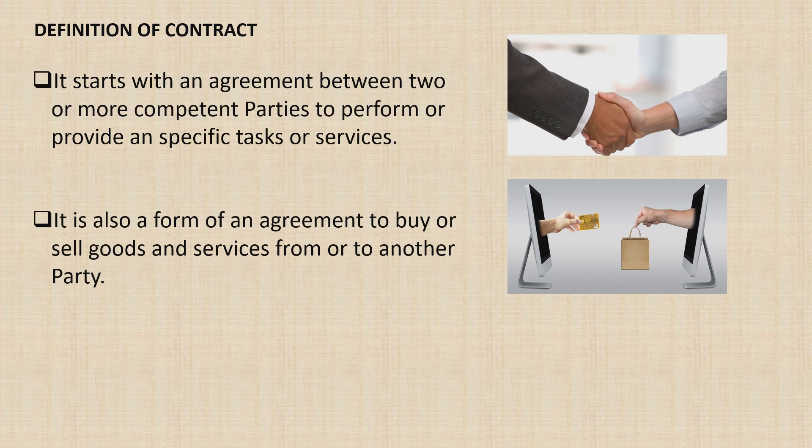One example is when you intend to buy a home appliance and to be paid on an installment basis. An agreement has to be signed by the buyer before the appliance will be given. The contract would include the amount of amortization, date of payment, and warranty of the product.